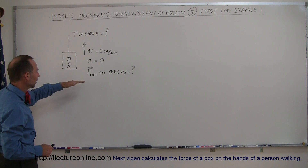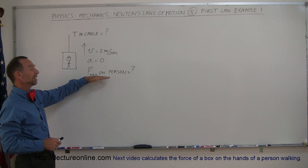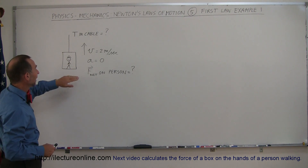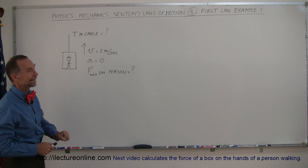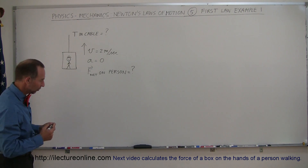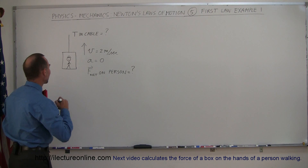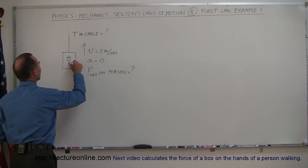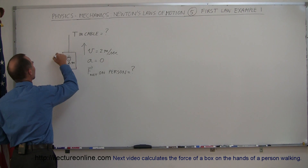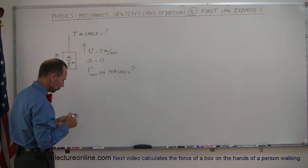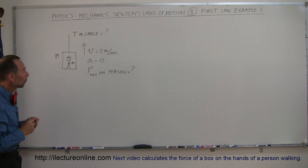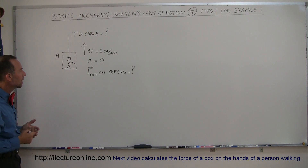The first thing we want to figure out is what is the net force acting on the person, and secondly, what is the tension in the cable. Let's say that the mass of the person is equal to m, and the mass of the car that they ride in is equal to big M. So what would be the force on the person?